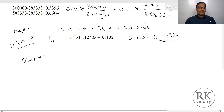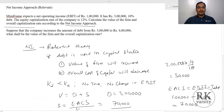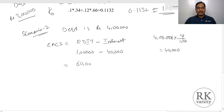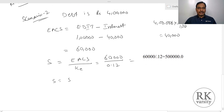Now we calculate for scenario two, where debt is 4 lakhs. First, we calculate earnings available to common stockholders. This equals EBIT minus interest. EBIT is 1 lakh, which remains constant, minus 4 lakhs times 10%, which equals 40,000. So earnings available to equity shareholders is 1 lakh minus 40,000, that is 60,000. Value of equity equals 60,000 divided by 0.12.